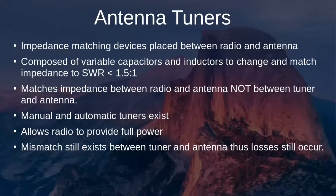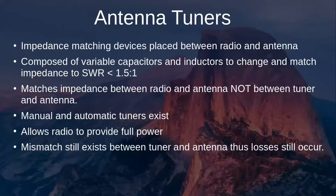There are manual and automatic antenna tuners. The tuner allows the radio to provide full power to the tuner, but the impedance mismatch still exists between the tuner and the antenna — so losses still occur on that segment of feed line. The radio is not exposed to high voltage, so it won't reduce power on its own. The radio applies full power up to the antenna tuner, but SWR may still be mismatched between the tuner and the antenna if the antenna is not resonant.